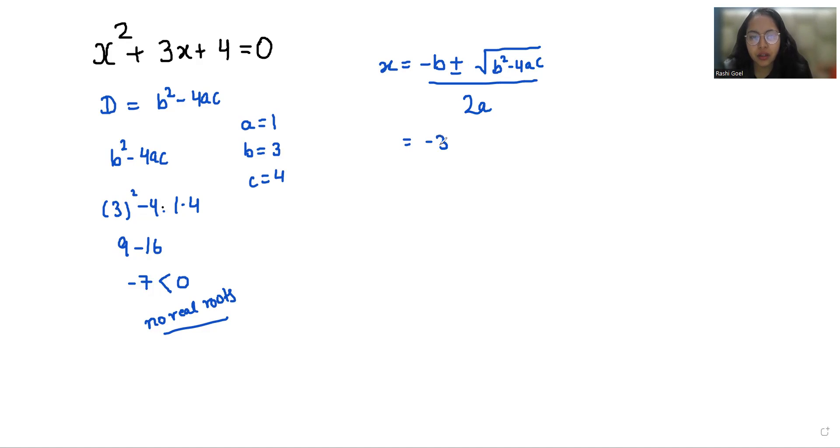That's -3 ± √(9 - 16) / 2, which is -3 ± √(-7) / 2, equals -3 ± √7 · √(-1) / 2.